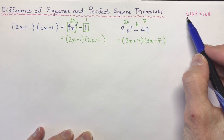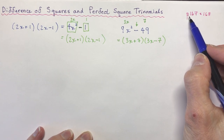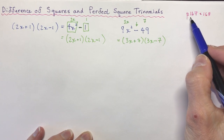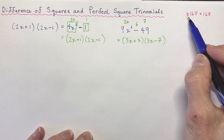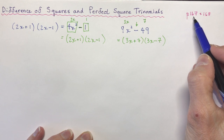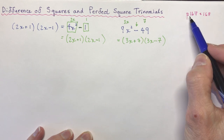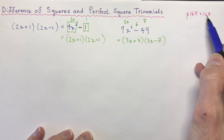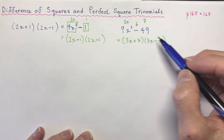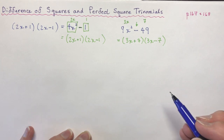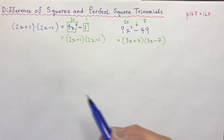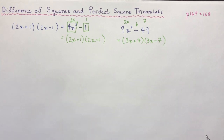Homework questions — this is from Math Power 10, and I will give the link again. These are the page numbers that have homework questions reflecting either difference of squares or perfect square trinomials.